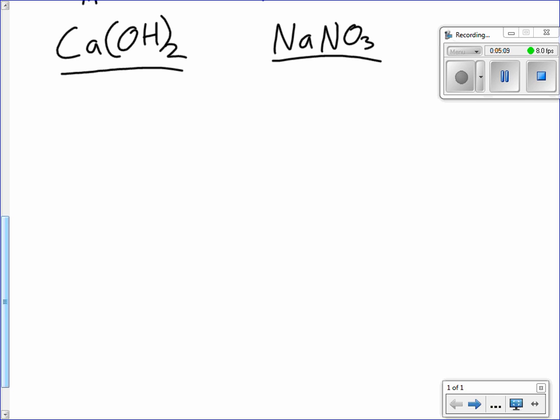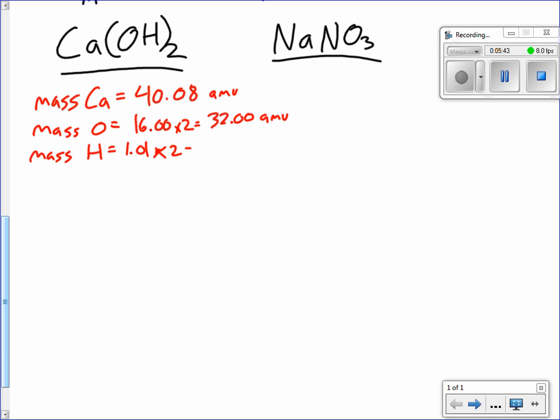Okay. We're doing molar mass here. So mass of calcium, I'm pretty sure 40.08. Let me check that. Okay. That's right. Don't want to forget units. Then we'll do mass of oxygen. 16.00. Don't forget there's two of them. So it's 32.00 AMU. Okay. And mass of hydrogen. 1.01 times 2.00. 2.02 AMU.